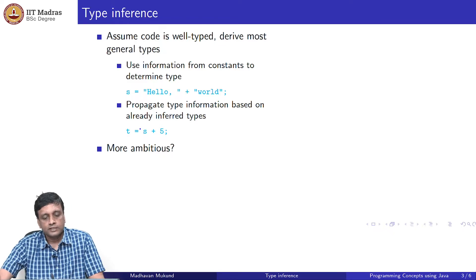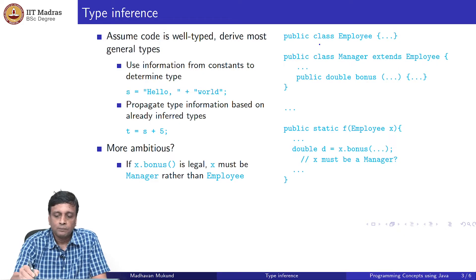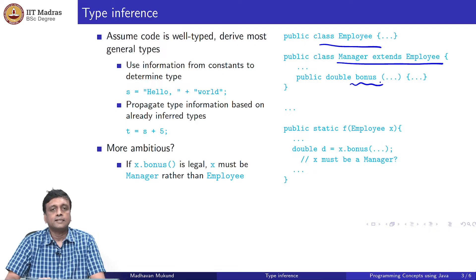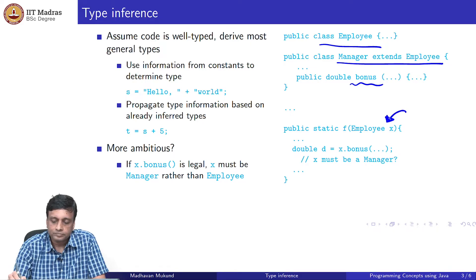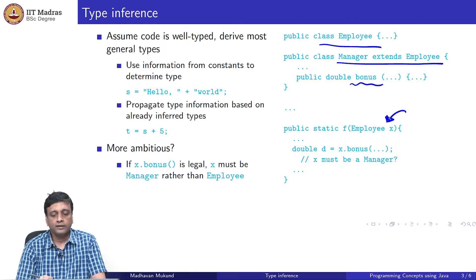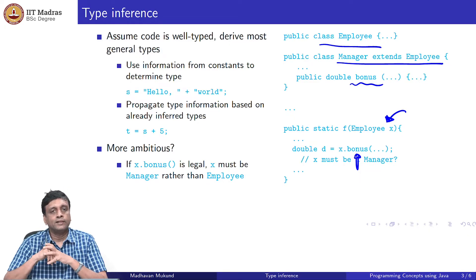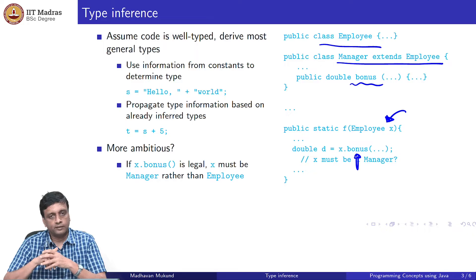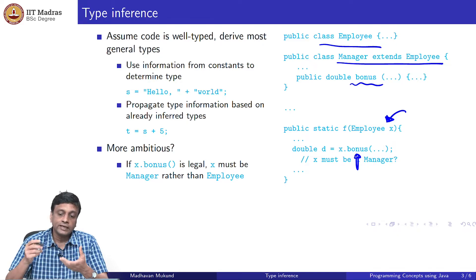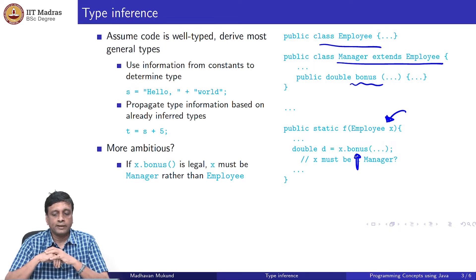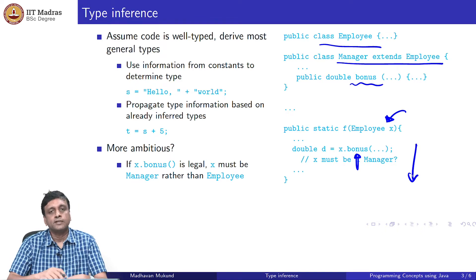Getting back to our employee-manager example: suppose manager extends employee and adds extra functionality in the form of a method called bonus, which is not in employee. We have a function which takes an employee, but inside this function it calls bonus. The traditional Java compiler will say it has no way of knowing that employee x is actually a manager, and therefore this is wrongly typed and will throw an error. Whereas the type inference mechanism will say: you believe this thing has a bonus defined, so maybe every time this function is called, x is always a manager.